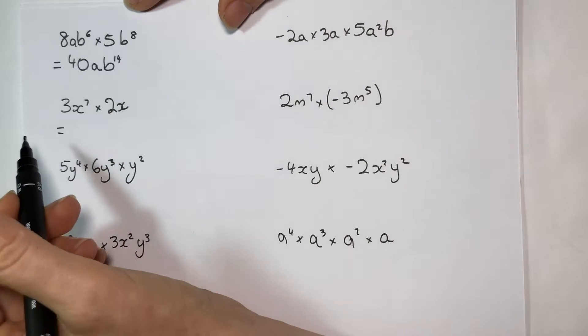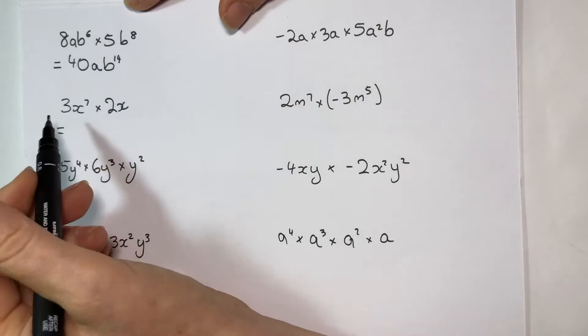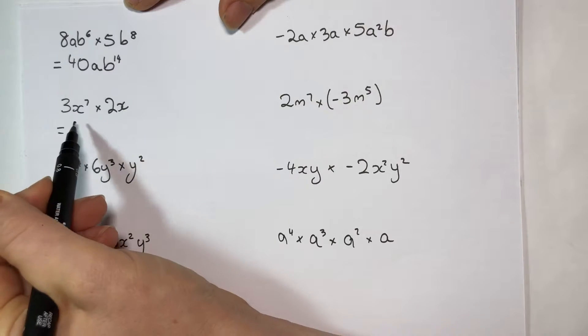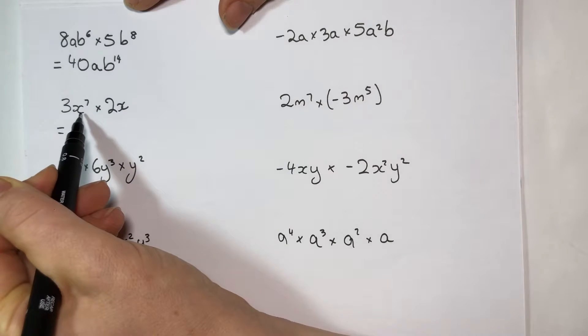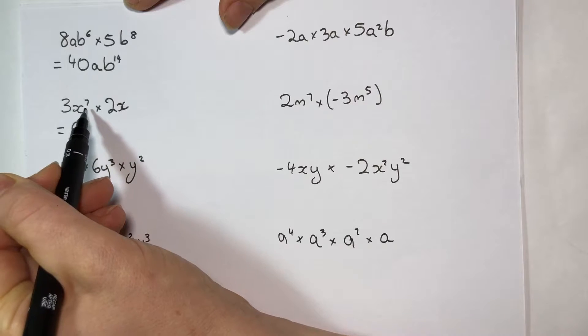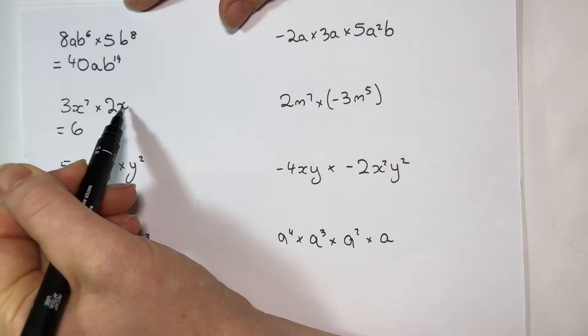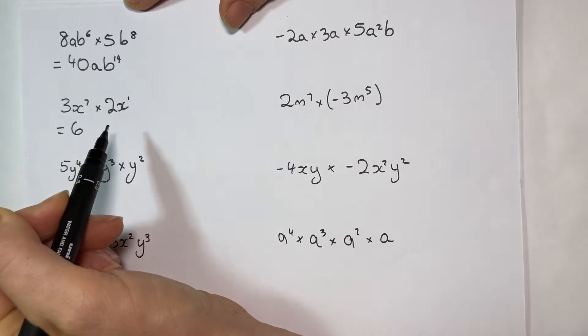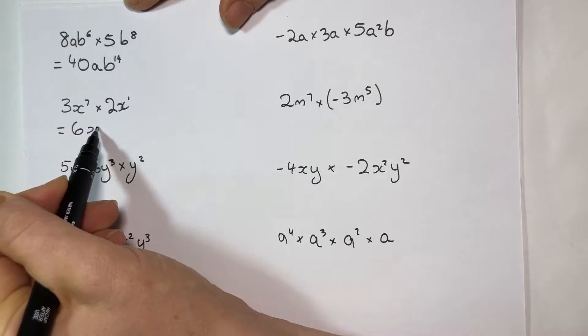Over here, pause it again. Now you've had a turn, okay, so 3 2's are 6, x to the 7, so we've got 7 lots of whatever the x genome is, and another 1 over here, so if there's no number written in, it's got an invisible one, so that's x to the 8.